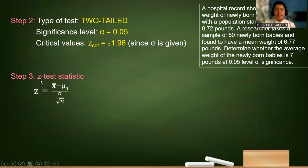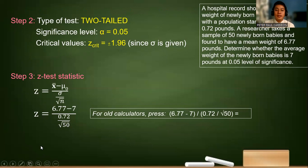Using our z-statistic, we will now compute in step number three, substituting the value 6.77 minus 7 over 0.72 over the square root of 50. So for all calculators, let us press this one. But for new scientific calculators, you can directly substitute. So our z value, could you check if it is negative 2.26?